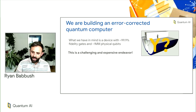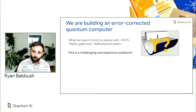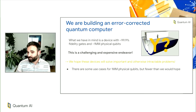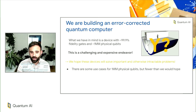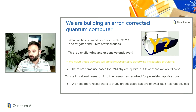Why are we doing this? For many scientists, part of the answer is that quantum computers are really interesting and very cool. But if you look at the scale of investment that Google and frankly the world is making in these technologies, it's clear there's hope for more than that. In particular, people are hoping that these devices are going to actually solve important and otherwise intractable problems in practice. So to what extent is this really the case? We do know there are some use cases for a device like this with a million physical qubits, but perhaps there are fewer clearly articulated applications than we would hope. This talk is about research into the resources required for promising applications, and I hope we inspire more researchers to study practical applications of what a platform like this could actually achieve.